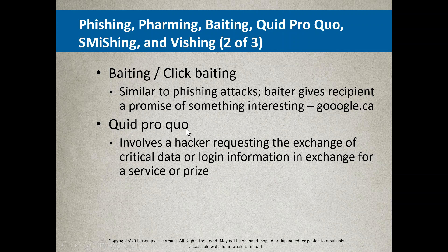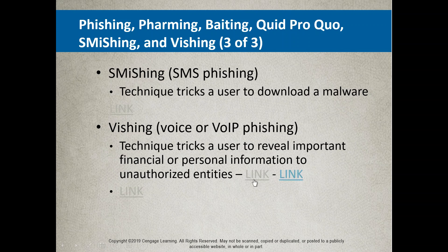Quid pro quo — Latin for 'you give me something, I give you something' — is a kind of exchange by hackers. One hacker has breached a site and collected data; another has different data; they swap. This is where hackers work together, possibly communicating on the dark web using the onion router.